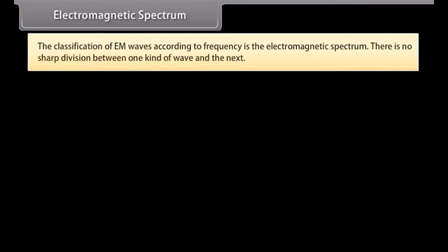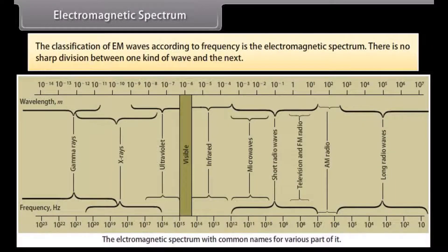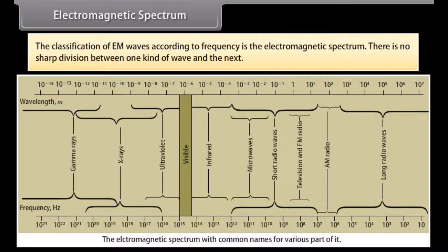The classification of EM waves according to frequency is the electromagnetic spectrum. There is no sharp division between one kind of wave and the next; the classification is based on how the waves are produced or detected. Let us describe these different types of electromagnetic waves in order of decreasing wavelengths.